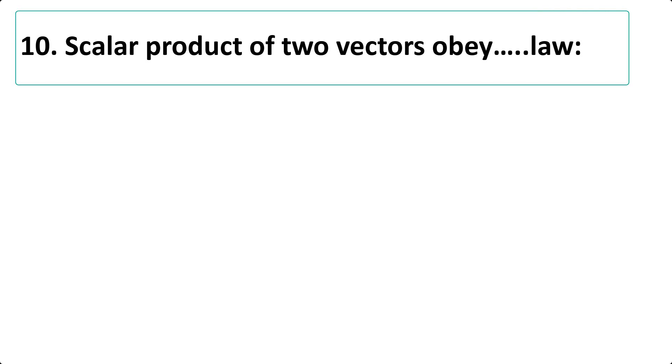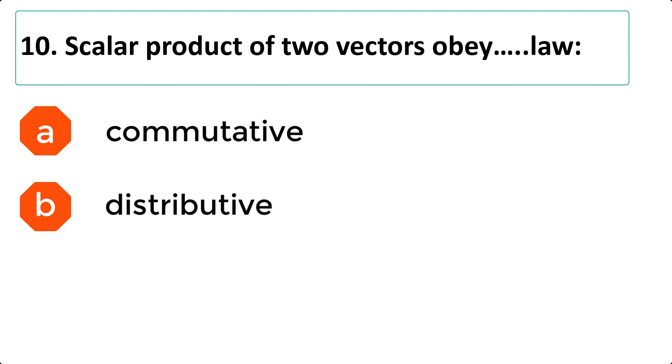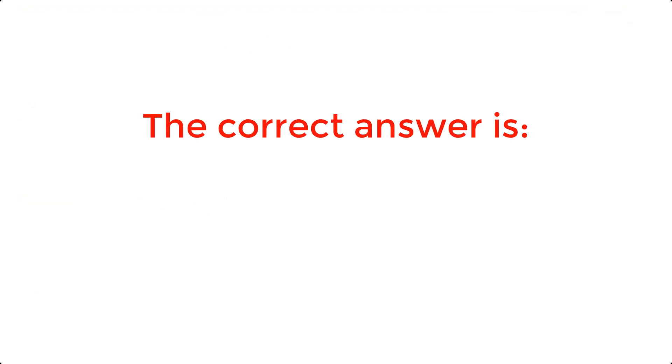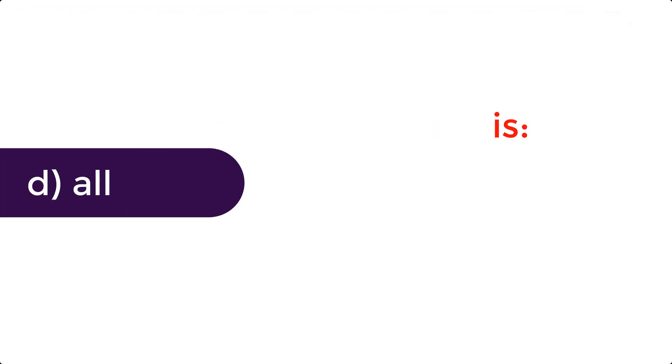Scalar product of two vectors obey the law: a. Commutative b. Distributive c. Associative d. All. The correct answer is d. All. Question 9.